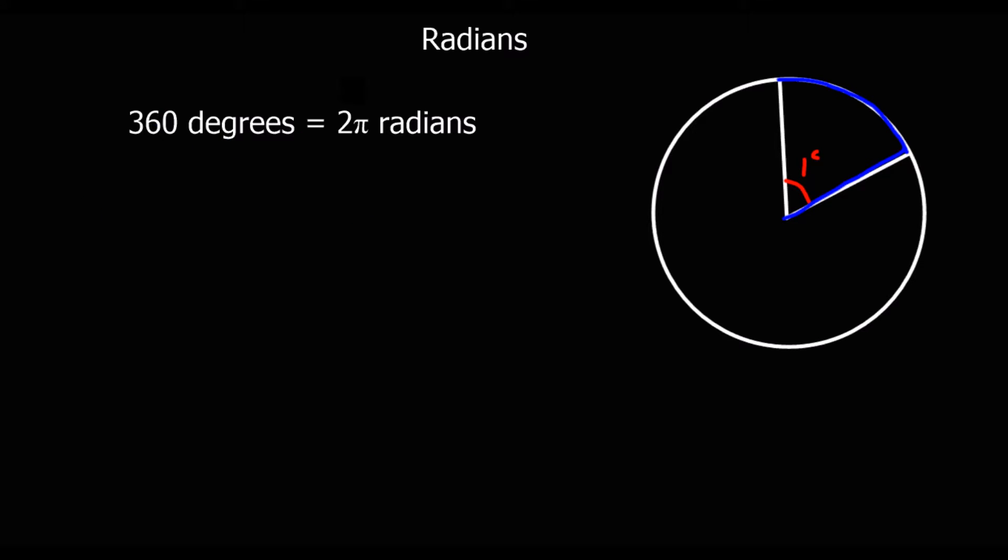If I wanted to convert degrees to radians, I divide by 360 and then multiply by two pi. So divide by what it's out of at the moment, multiply by what I want it to be out of.